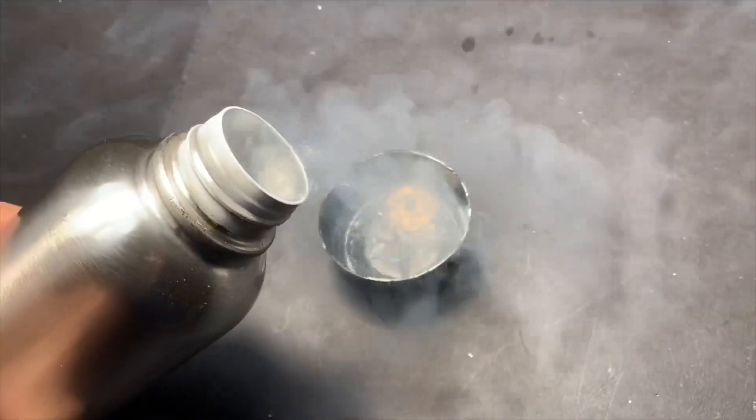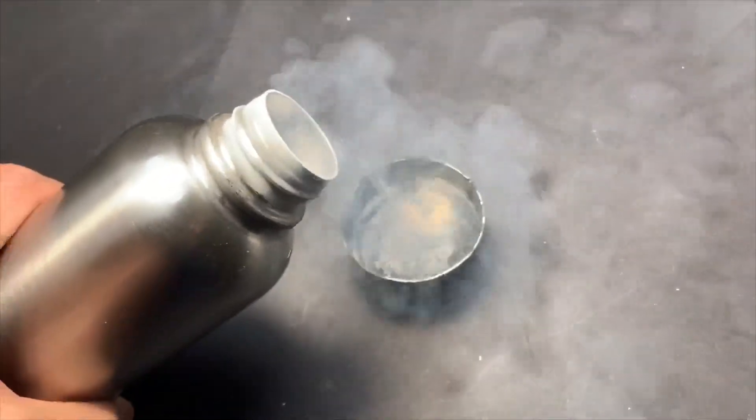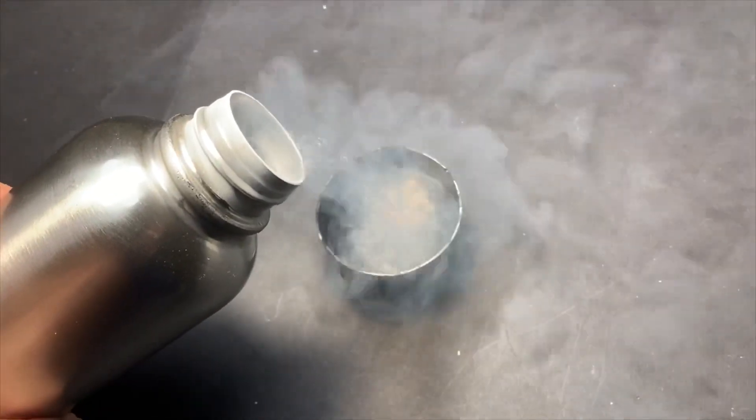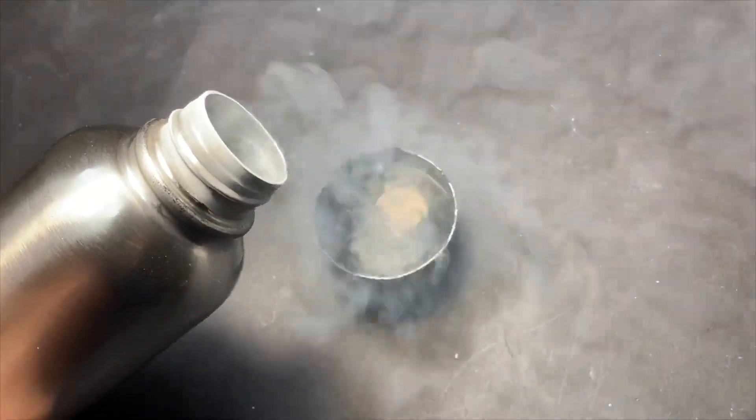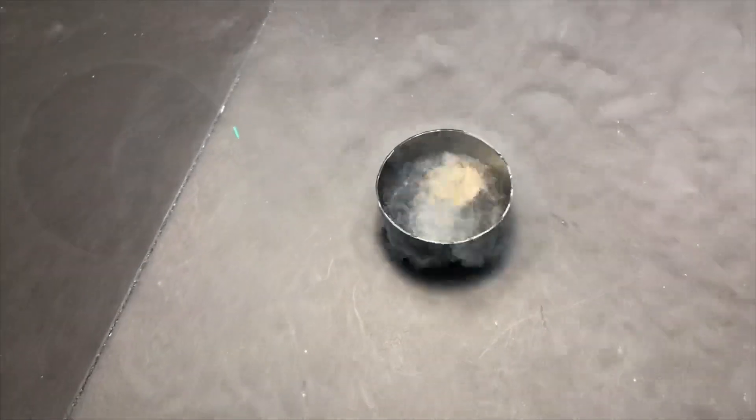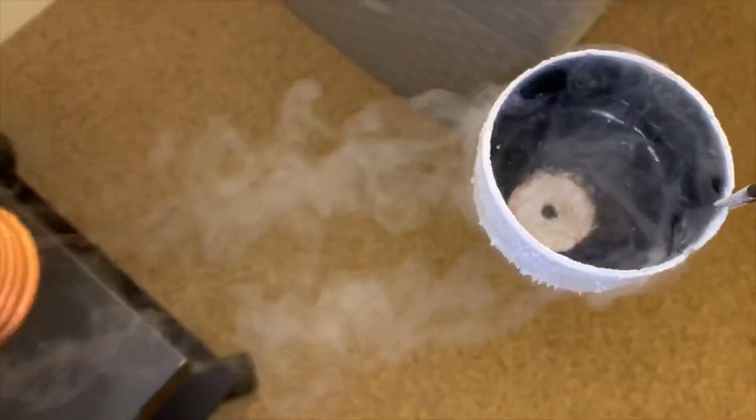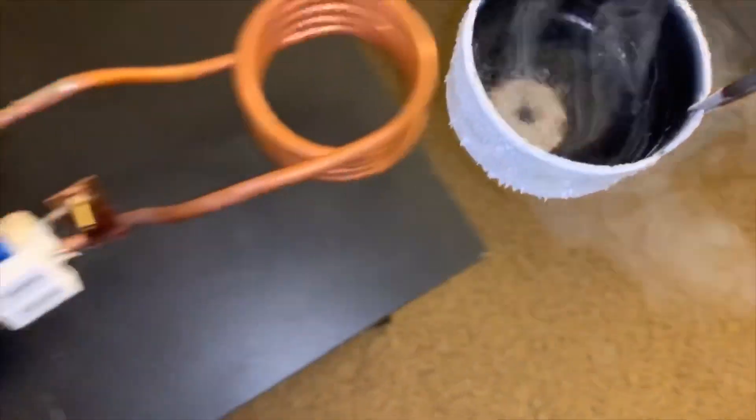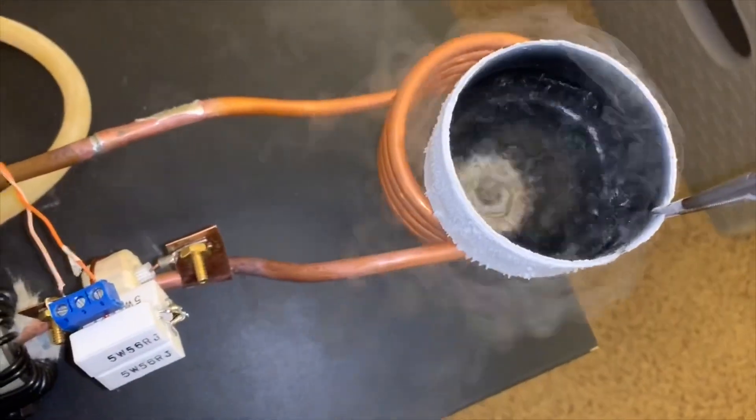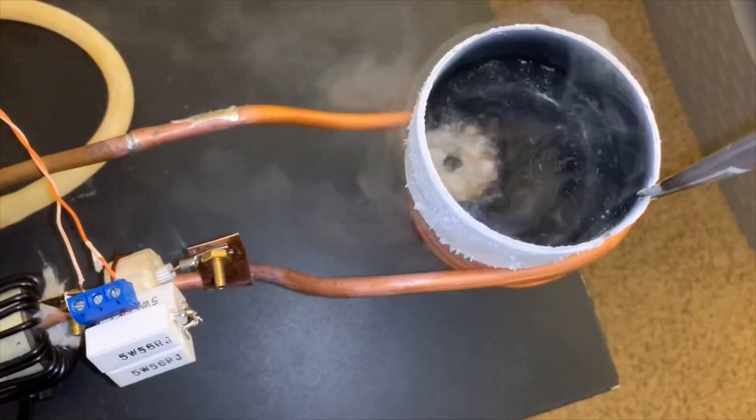So here I'm cooling the metal washer down with liquid nitrogen and then we're going to heat it. As you can see here, it instantly starts boiling off the liquid nitrogen as soon as you put the steel washer above the induction coil.